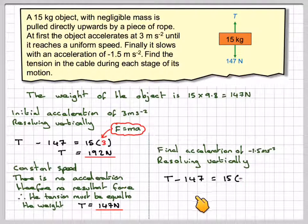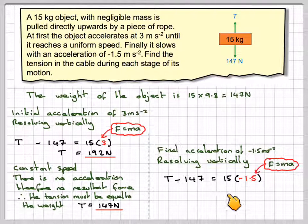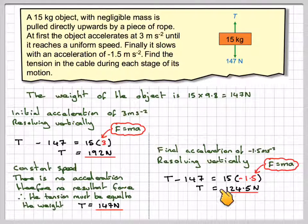We've got T minus 147 equals 15 times minus 1.5, and we use again F equals MA. So it's going to be T equals 15 times minus 1.5 plus 147, which gives me 124.5 newtons.